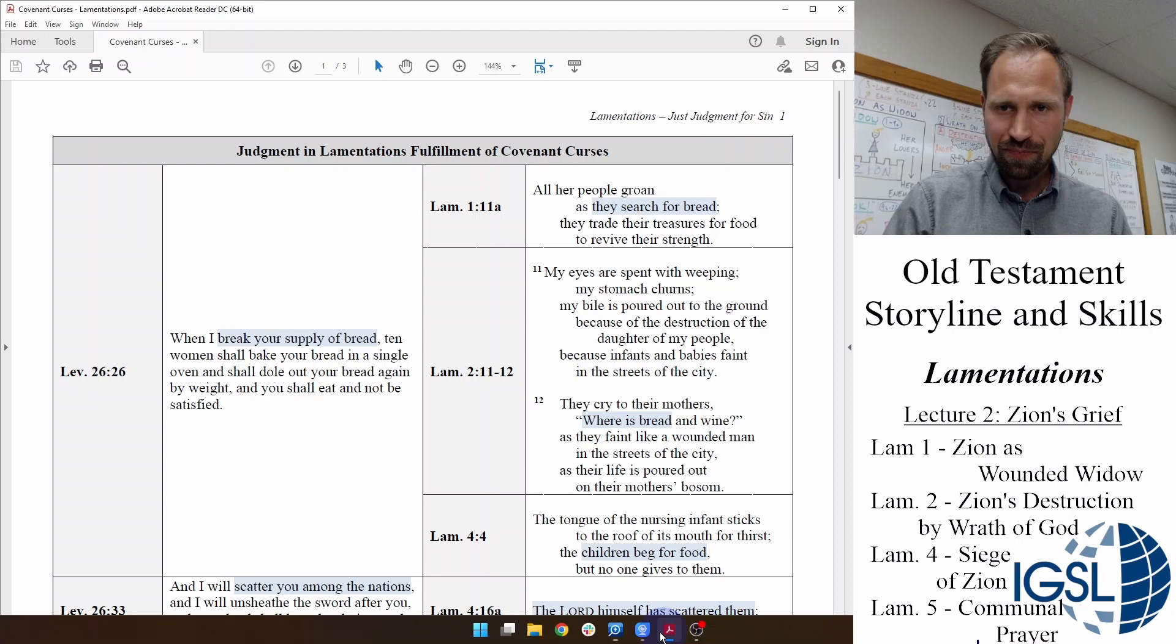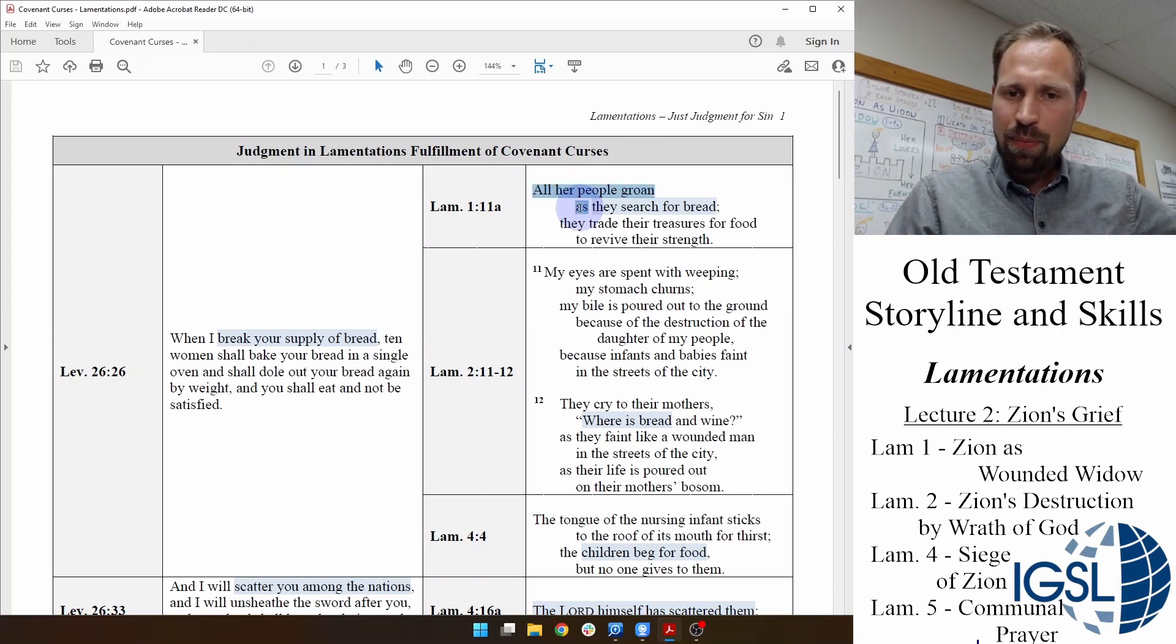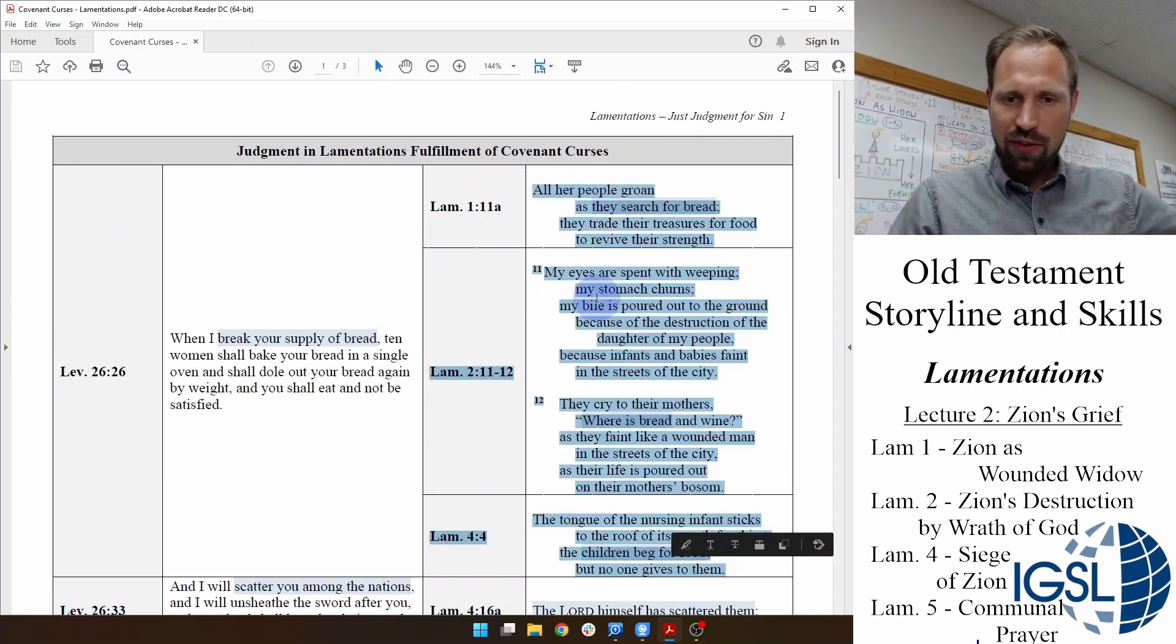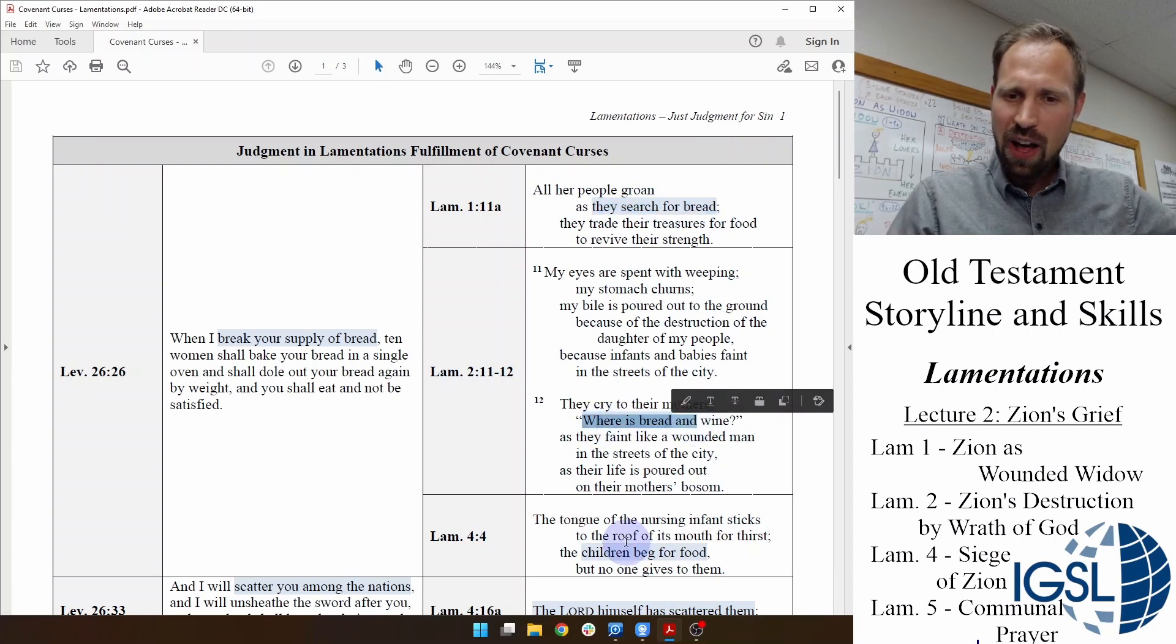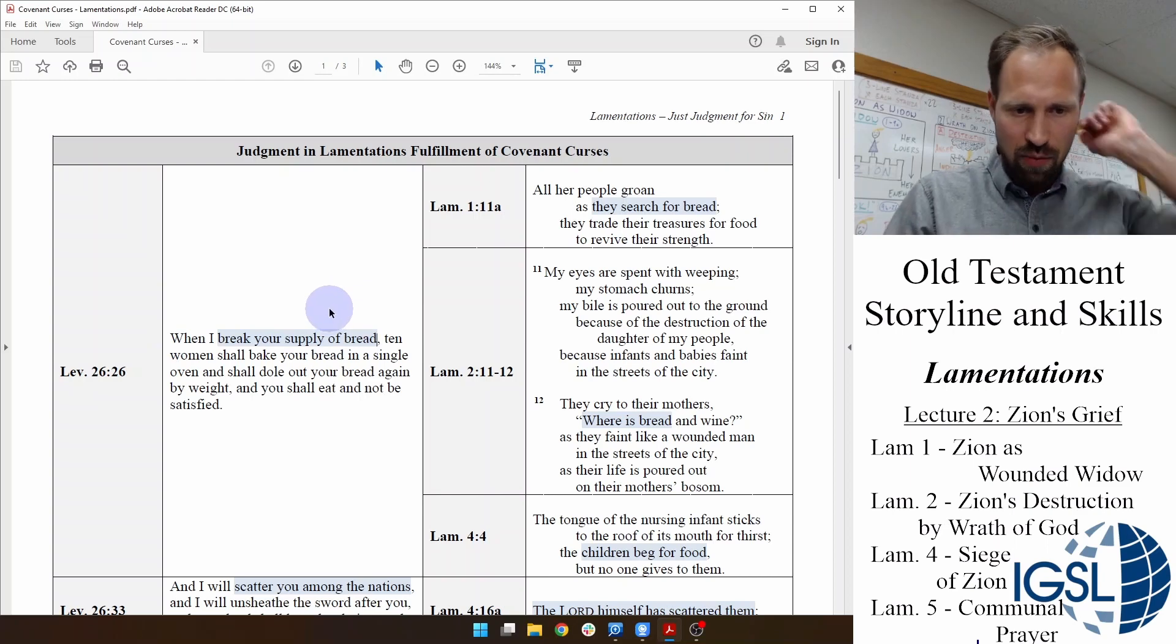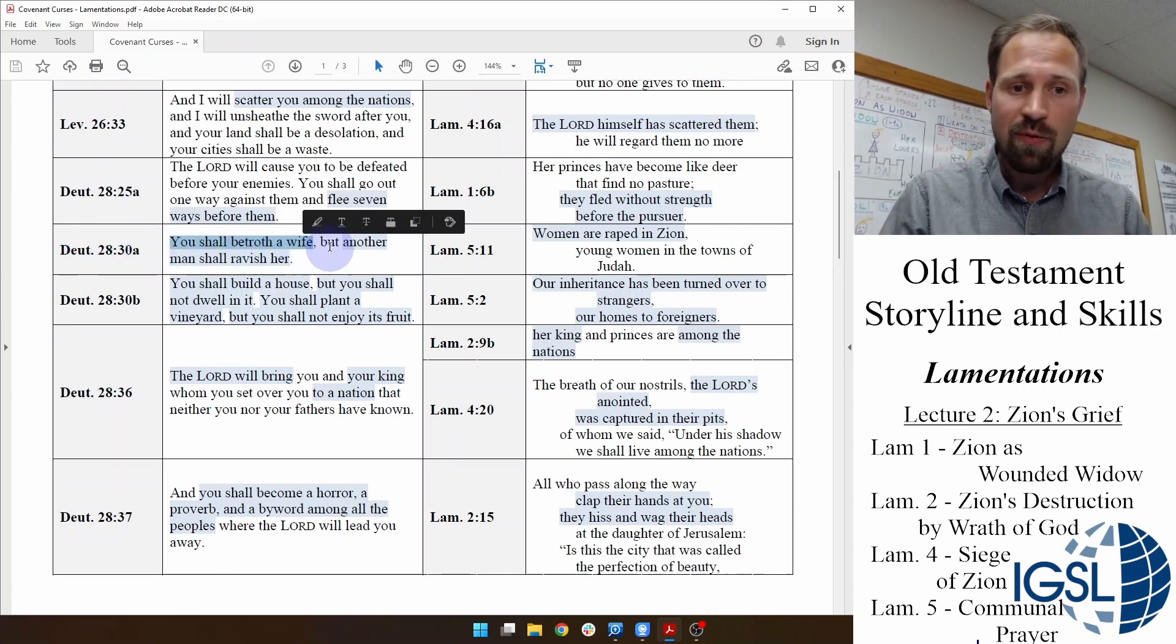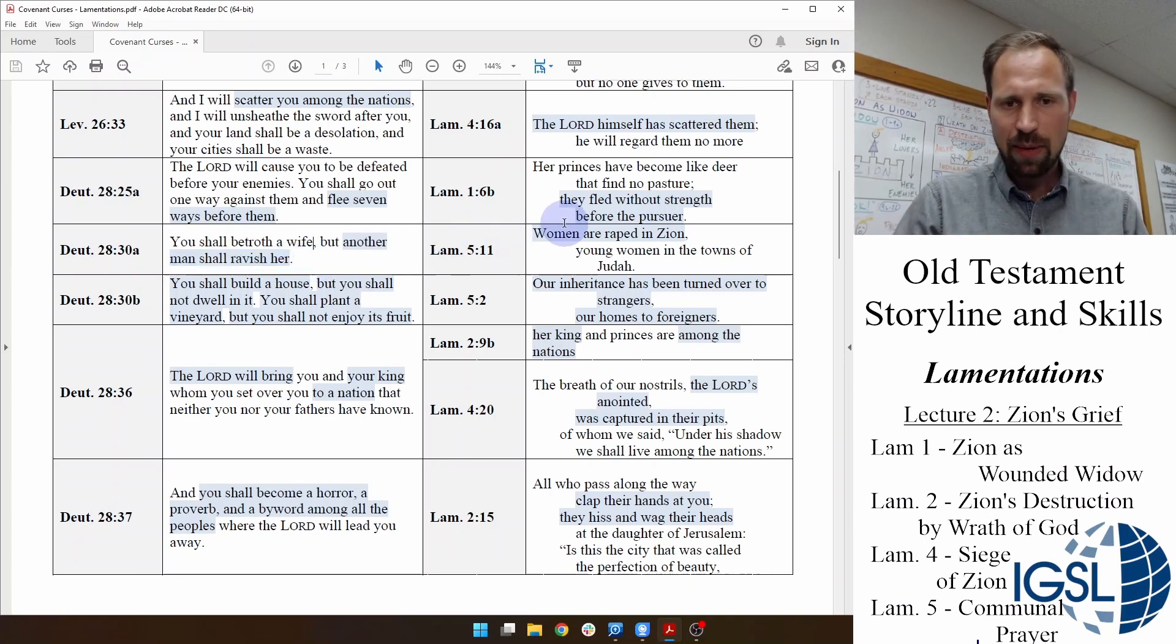Take a look at this. I've compiled a table for you right here. Judgment and Lamentations as a Fulfillment of the Covenant Curses. We already saw in an earlier lecture how the people of Zion longed for food. They searched for bread. Where is bread and wine? The children beg for food, but no one gives it to them. Well, this is in fulfillment of Leviticus 26:26, which says that I will break your supply of bread. And then this is really awful. In Deuteronomy 28:30, God says, You will betroth the wife, but another man will ravish her. And that's what we see in Lamentations 5:11. Women are raped in Zion, young women in the towns of Judah.